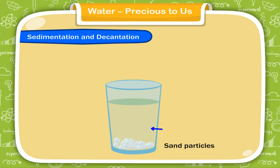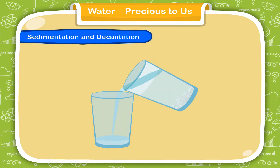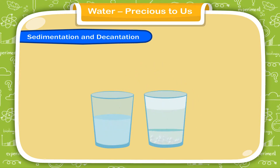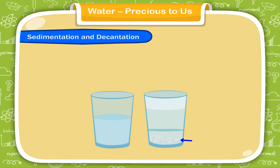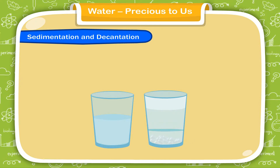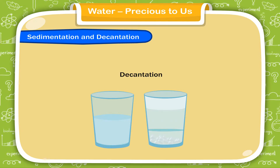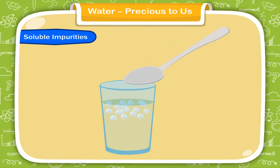The sand that settles down is called sediment, and the process is known as sedimentation. Now pour the clean water into another glass slowly. The insoluble impurities settle at the bottom of the first glass as sediment. This process of pouring the clean water off is called decantation.